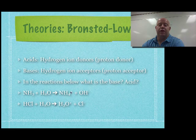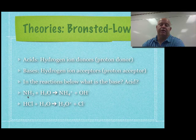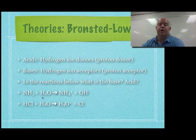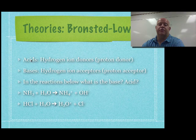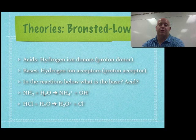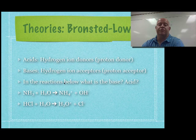If you have NH4+, and it goes to the left, it becomes NH3. It had four hydrogens, now it only has three, so it becomes a hydrogen ion donor — it's acting as an acid in the reverse reaction. The OH- goes from one H to two to become water, so it's acting as the hydrogen ion acceptor — the base in the reverse reaction.